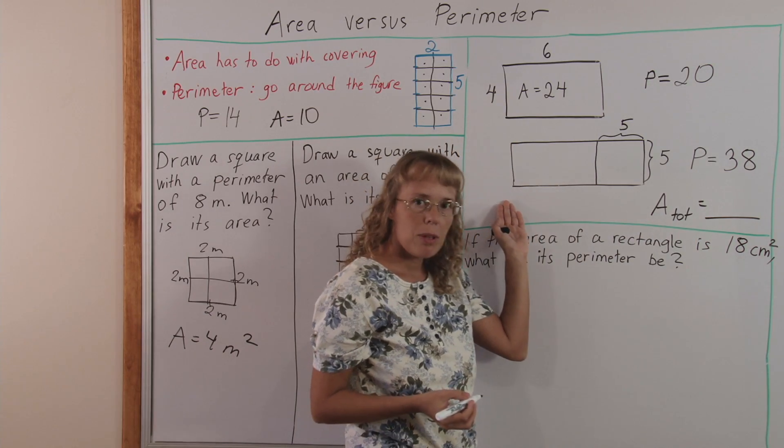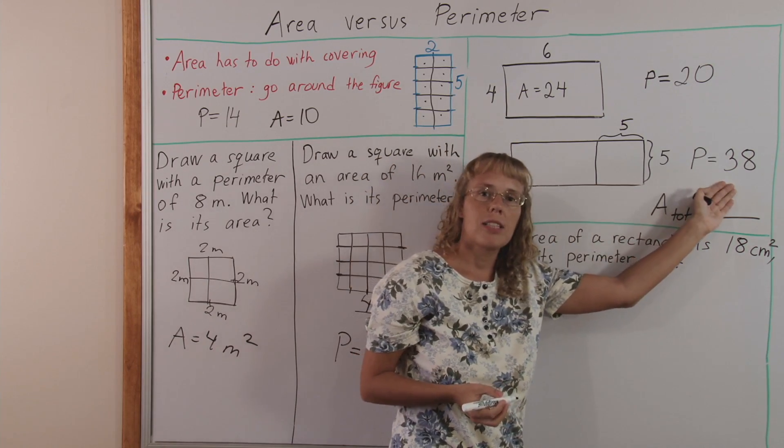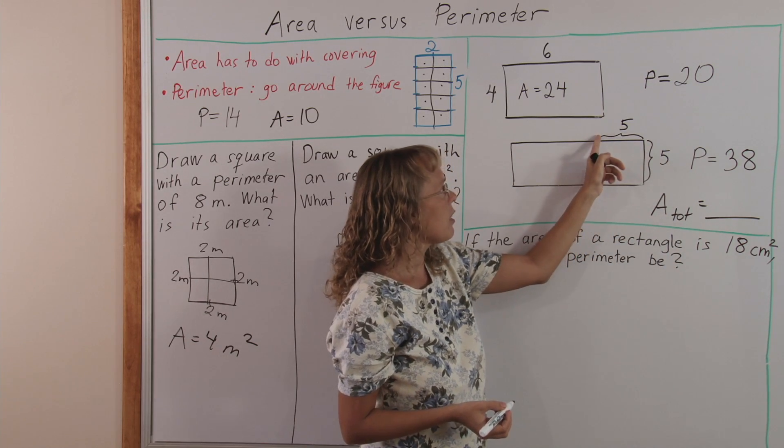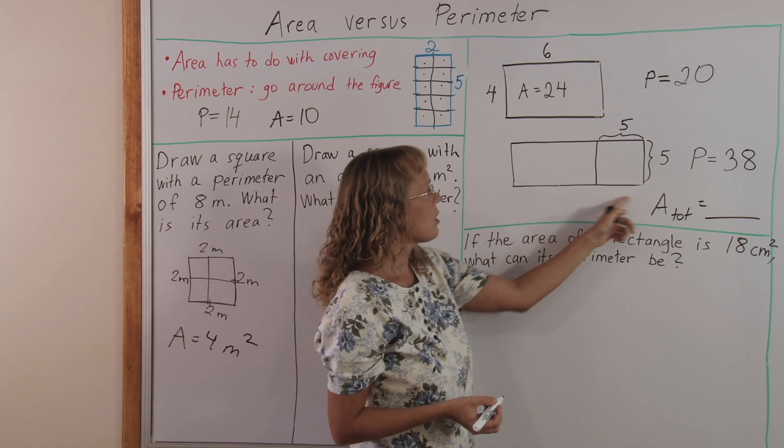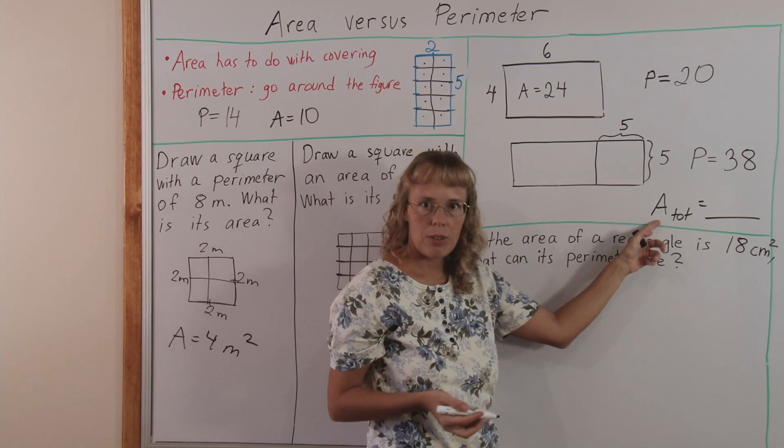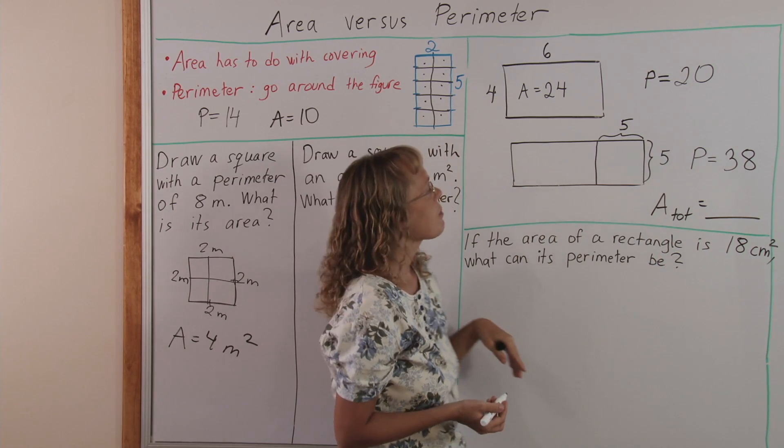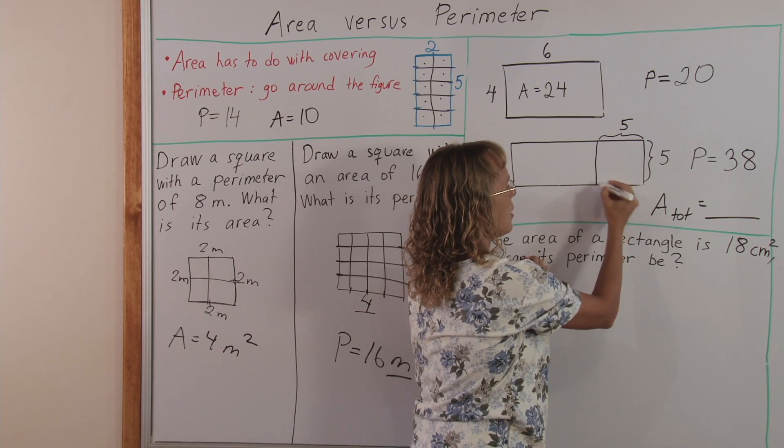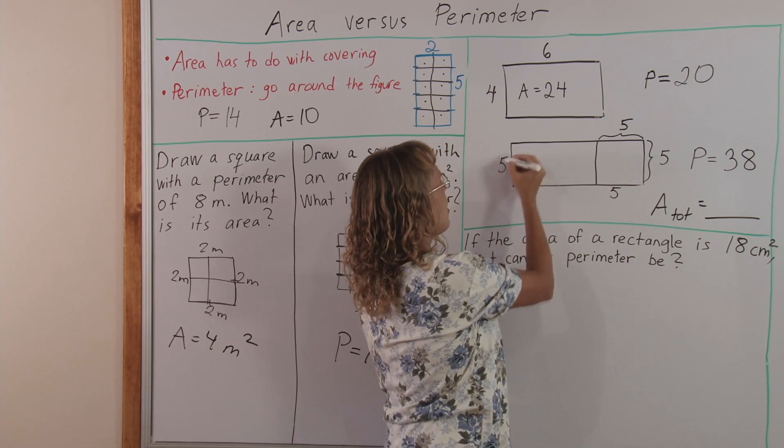In this problem, the perimeter is given as thirty-eight units, and here's sides, five here and five here. These are not given, and it's asking for the total area. Now, being a rectangle, here is also a five, right? This here is five, this here is five, these sides are five.